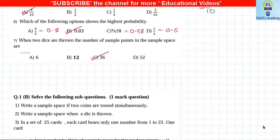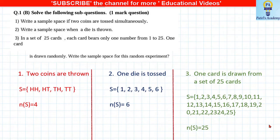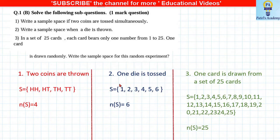Write the sample space when two coins are tossed: S = {HH, HT, TH, TT}, with total outcomes nS = 4. When one die is thrown, the sample space is S = {1, 2, 3, 4, 5, 6}, with total outcomes nS = 6.